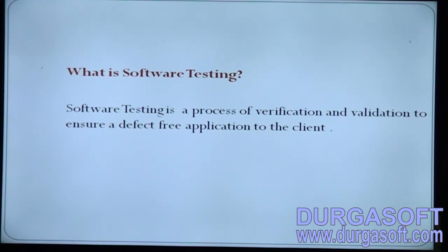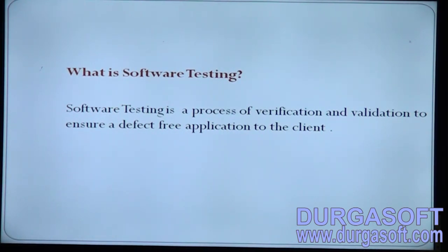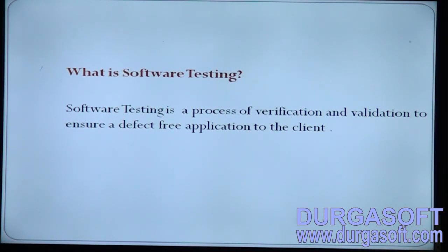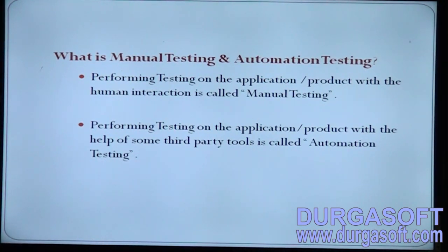Software testing is a process of verification and validation to ensure a defect-free application to the client. Verification is a process to ensure we are following the right path. Validation is a QA activity where QA people test the application and ensure it is working as per the requirement. By 'ensure,' we are guaranteeing the client that the application we are going to release is defect-free.